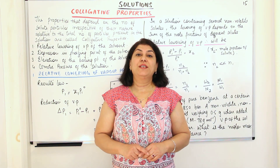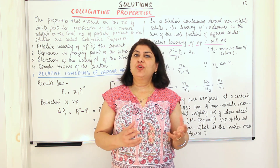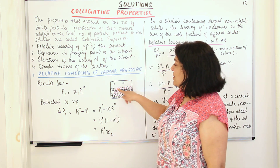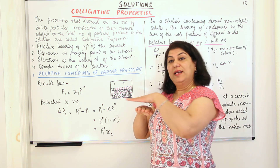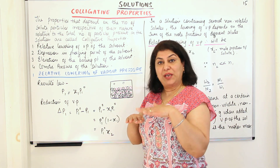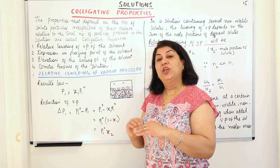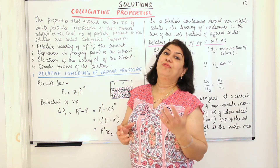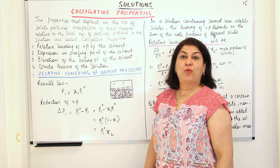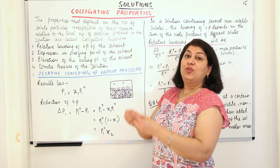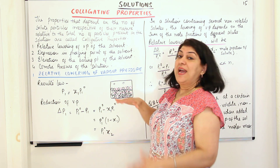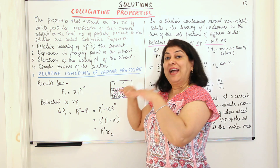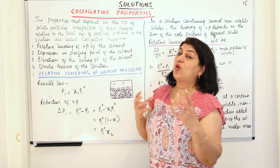But before I come to colligative properties, let us remember what vaporization or vapor pressure was. You have a liquid in a container. On the surface of the liquid, there is a layer of molecules of that particular liquid. Some of these molecules have higher energy and as a result, they can escape in the form of vapors, resulting in the formation of vapors above the liquid and these vapors start exerting pressure. For that temperature and that liquid, the vapor pressure is always fixed.